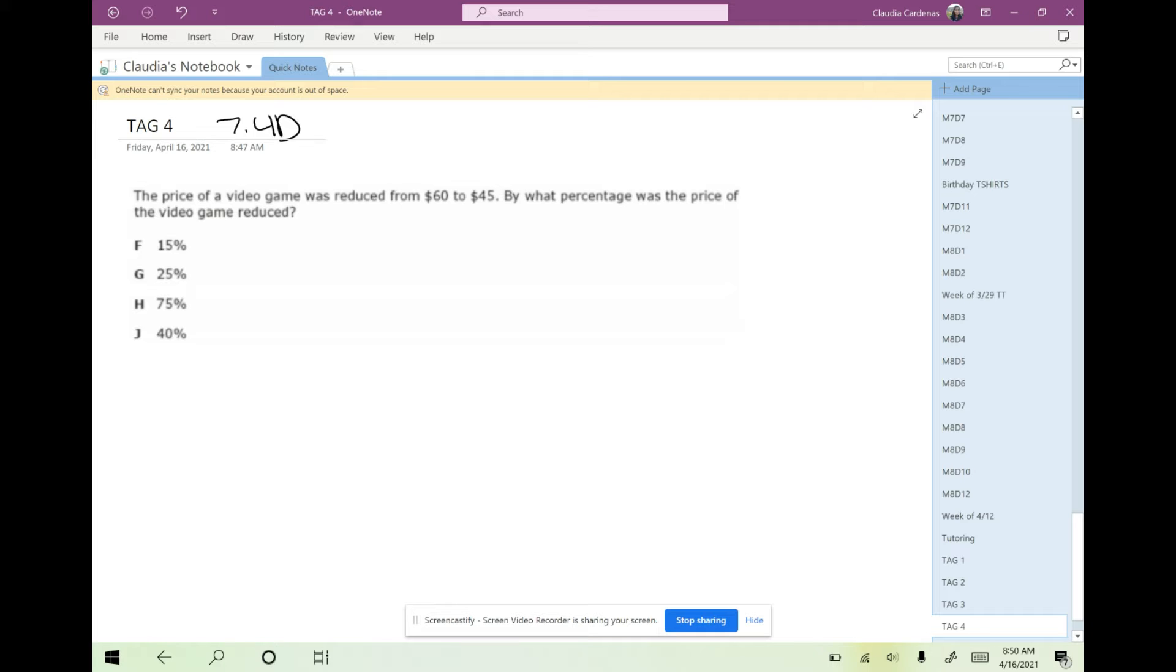Let's look at this problem together. The price of a video game was reduced from $60 to $45. By what percentage was the price of the video game reduced? I'm going to first model the thinking required to solve this problem with a double number line. I need to get a few pieces of information from the problem, so I'm going to read one more time in our read, draw, write strategy.